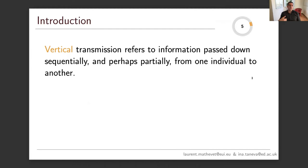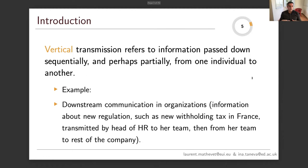Vertical transmission instead refers to information passed down sequentially and perhaps partially from one individual to another. Downstream communication in organizations is a prime example. To be concrete, information about new regulation, such as the new withholding tax in France, can be transmitted by the head of HR to her team and then from the HR team to the rest of the company.